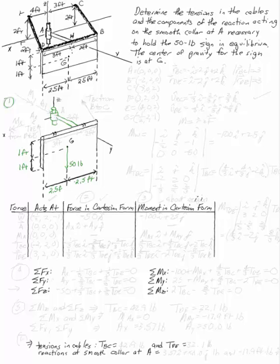A smooth collar at A will resist moving in two directions, so we'll have a force in the AX direction and a force in the AY direction. It's not going to resist moving along the Z axis, so there's no force in Z. However, this smooth collar will resist twisting about both the X axis and the Y axis, but it can twist about the Z axis. So there is neither a force nor a moment in the Z direction.